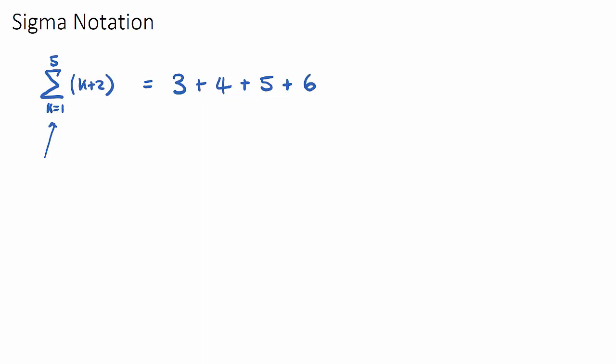Now when do we stop? Well we stop when k reaches this top number, which in this case is 5. So this will be the last one. If k has now reached the top number 5, 5 plus 2 is 7.